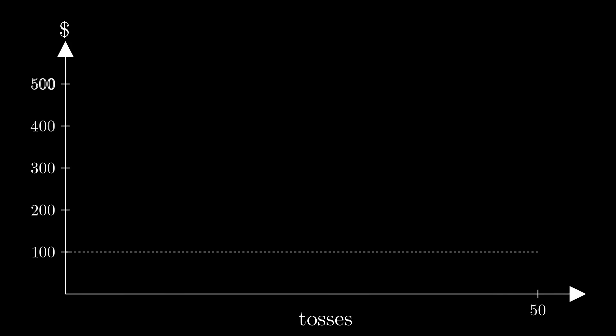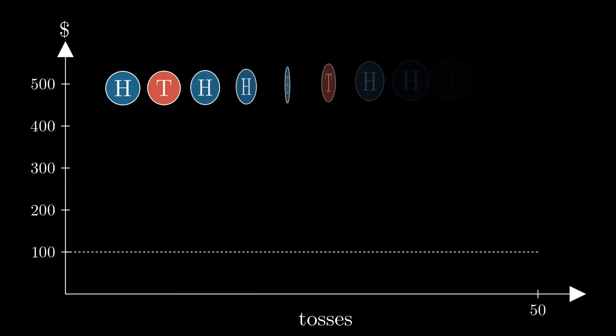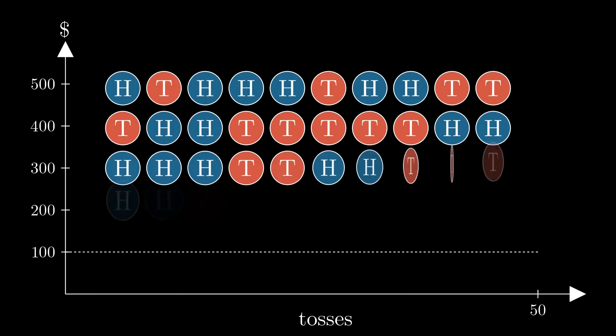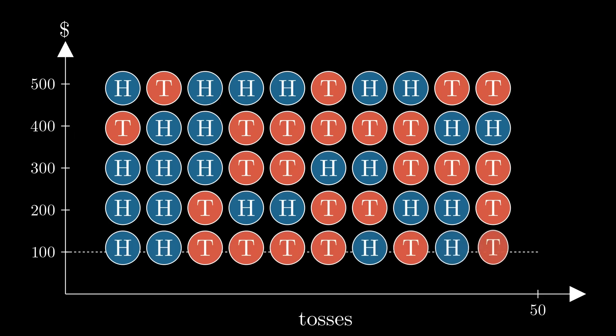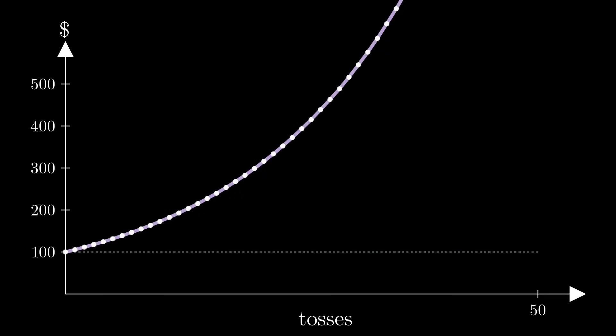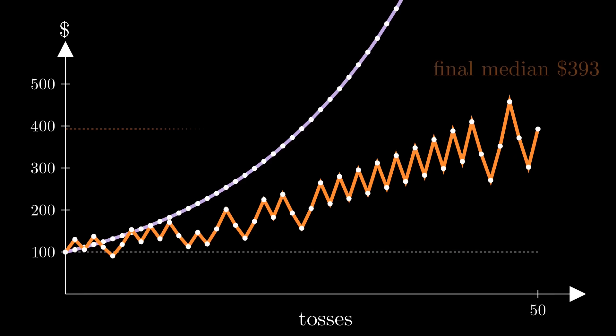Let's run our simulation again, having a million people each bet only 0.375 of their wealth. Here's the average. And yay, this time the median increases steadily.